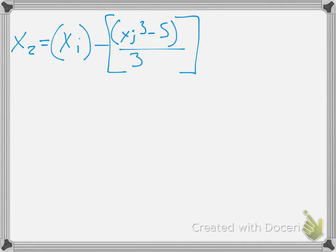The first thing we're going to want to do is go ahead and just rewrite our equation with the appropriate things filled in. So x_2 equals x_1 or x_i minus x_i cubed minus 5 over 3x_i squared.